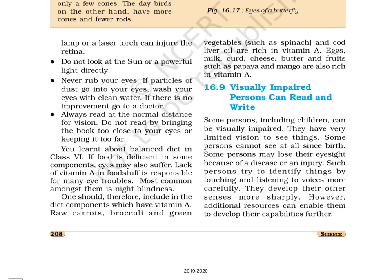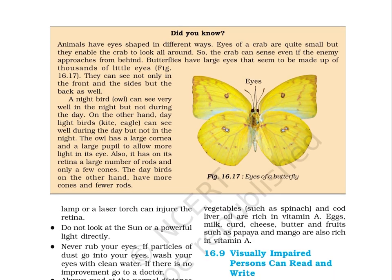Did you know that animals have eyes shaped in different ways? Eyes of a crab are quite small, but they enable the crab to look all around, so it can sense even if an enemy approaches from behind. Butterflies have large eyes that seem to be made up of thousands of little eyes — they can see not only in the front and sides, but the back as well. A night bird, the owl, can see very well at night but not during the day. Daylight birds like kite and eagle can see well during the day but not at night. The owl has a large cornea and a large pupil to allow more light into its eye, and has on its retina a large number of rods and only a few cones. Day birds, on the other hand, have more cones and fewer rods.